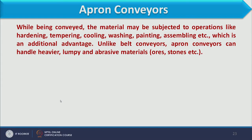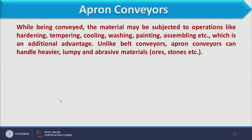A key advantage of the apron conveyor is that since material stays on a metal sheet, various operations can be performed on the material during transport, including hardening, tempering, cooling, washing, painting, and assembling. Unlike belt conveyors, apron conveyors can handle heavier, lumpy, or abrasive materials like ore and stone, because they use metal sheets rather than a flexible belt.